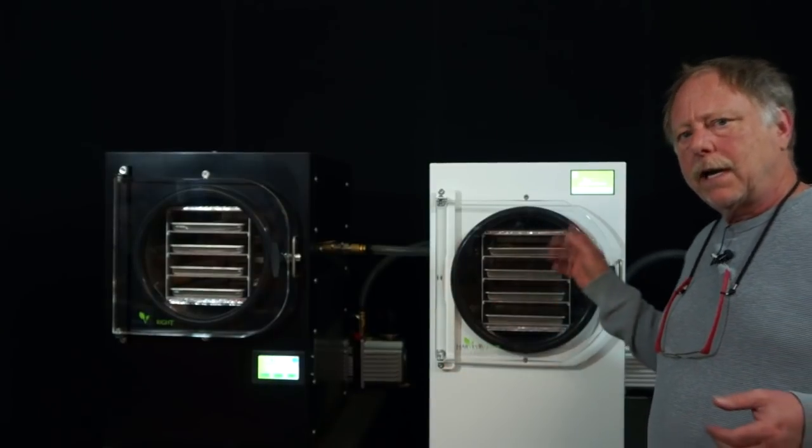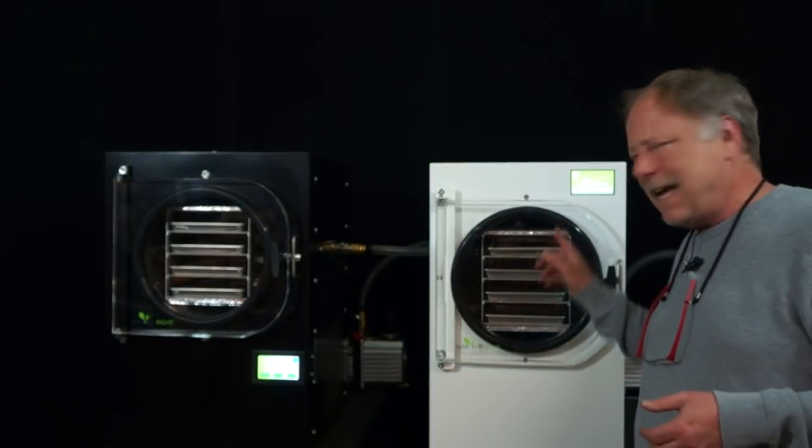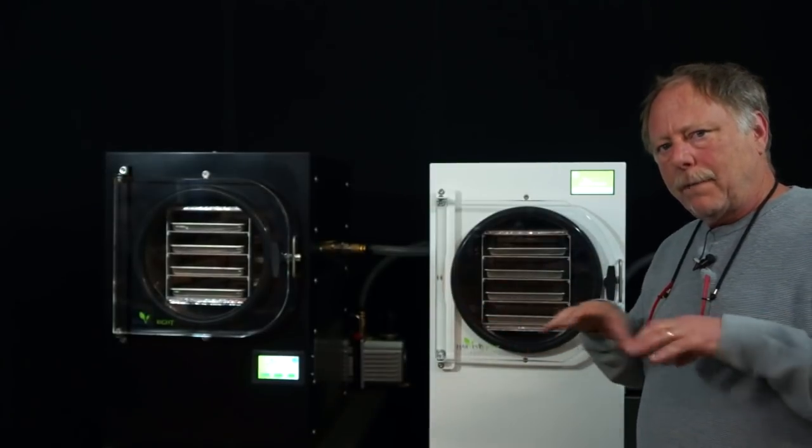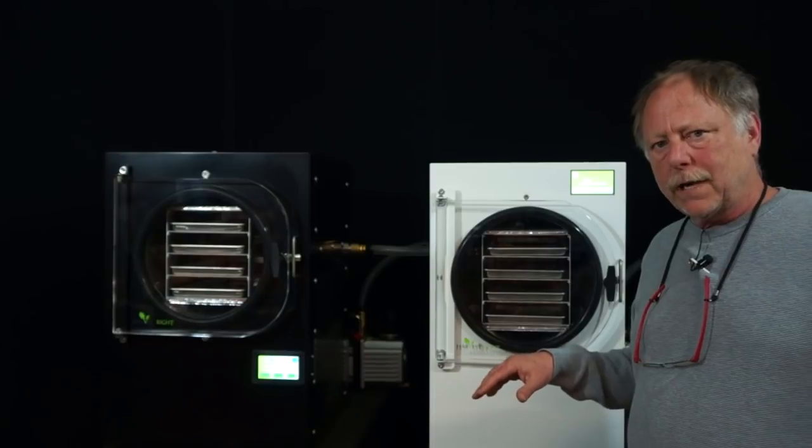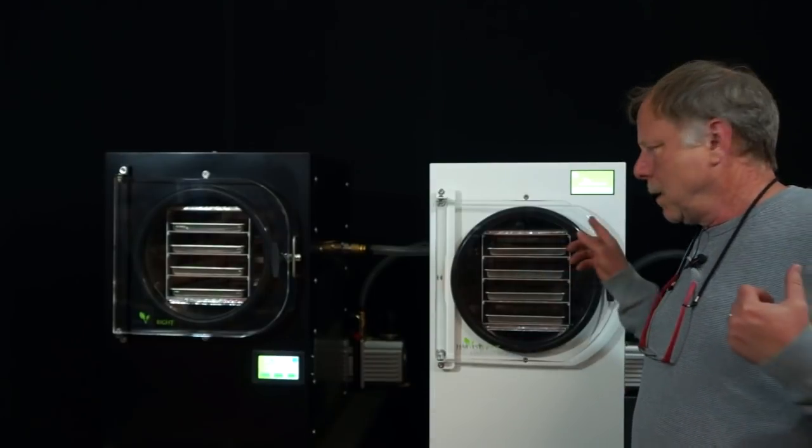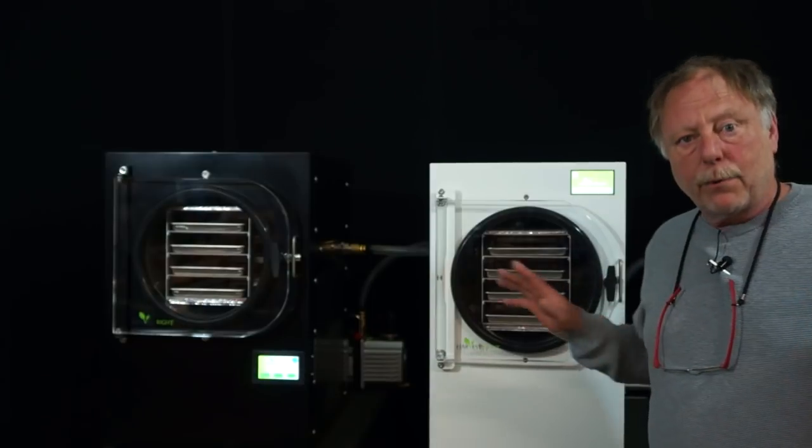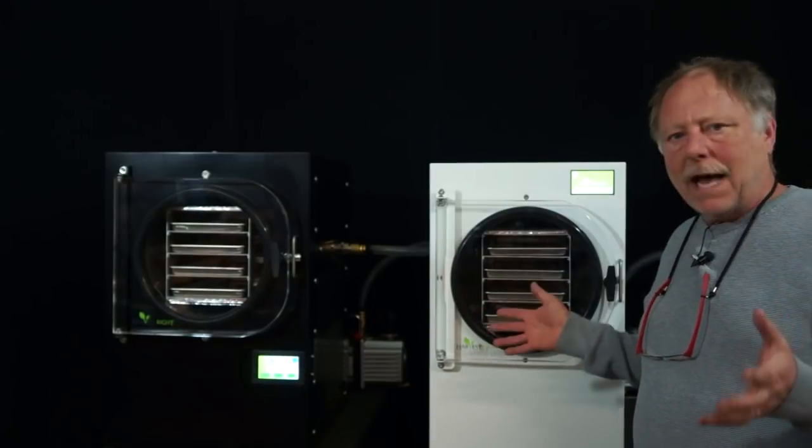Now my recommendation if you're going to get one of these new machines is get an extra set of trays because that way you can prep a bunch of food, put it in the freezer and it's going to be ready tomorrow when this batch is done. And then you select that it's already pre-frozen and it's going to be that much faster.